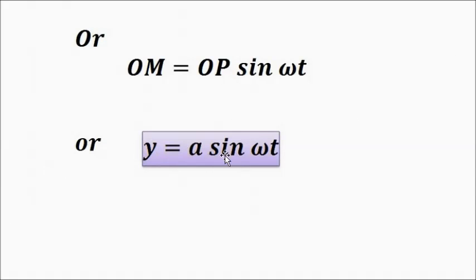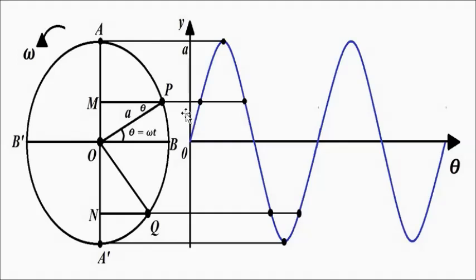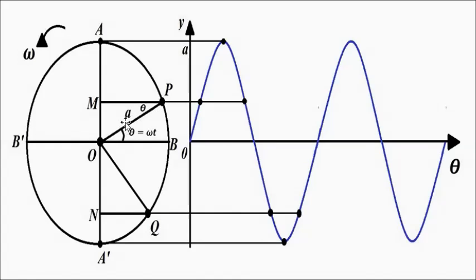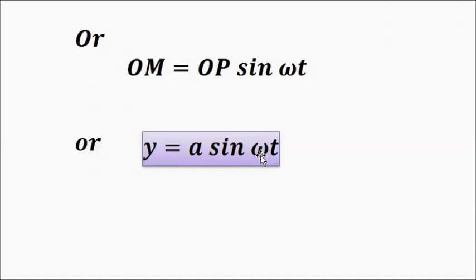We can represent OM as OP*sin(theta), which equals A*sin(theta), or A*sin(omega*t). Therefore y = A*sin(omega*t), which is the equation of SHM. The angle theta = omega*t, and by alternate angle theory this angle is also theta. Sin(theta) = OM/OP, and since OP = A, we get y = A*sin(omega*t).